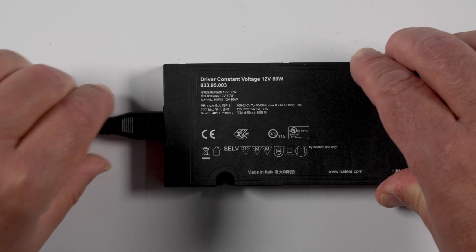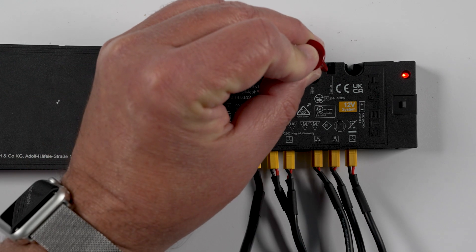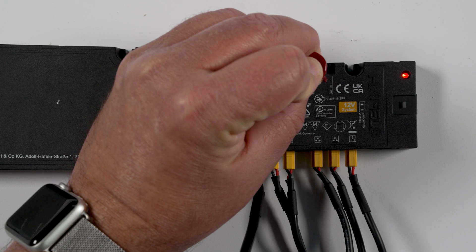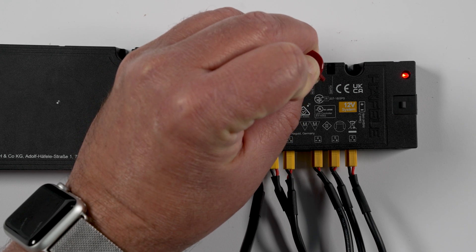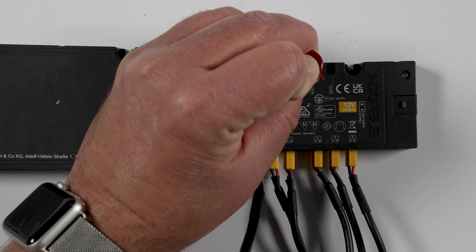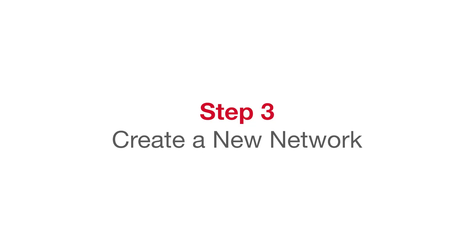Attach the power cord. The red indicator light on the mesh box should start blinking. If it isn't blinking, press and hold the reset button on the mesh box until it starts blinking — it takes about 8 seconds.